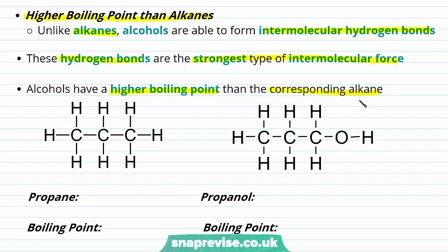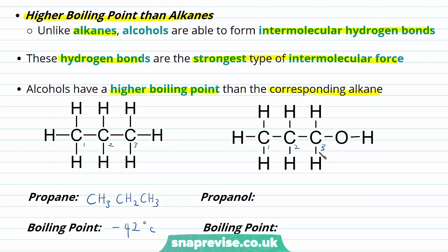If we take a look at the alcohol and the corresponding alkane, we can see just that. Here we have propane, which has three carbons and a structural formula of CH3CH2CH3. Propane has a boiling point of minus 42 degrees Celsius. If we look at propanol, which also has three carbons — it's the comparative alcohol — propanol has a structural formula of CH3CH2CH2OH and a boiling point of 97 degrees Celsius.